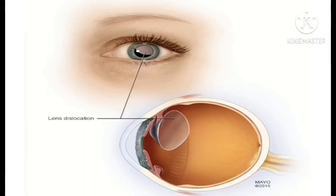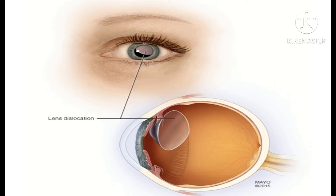Ectopia lentis can also be inherited as an isolated condition, and in that case it is usually autosomal dominant. Autosomal dominant is a pattern of inheritance in which an affected individual has one copy of a mutant gene and one normal gene on a pair of autosomal chromosomes. For example, if one of your parents has subluxation of the lens, there is a high possibility that you can have it as well.